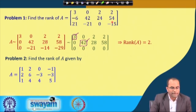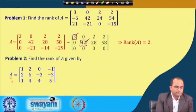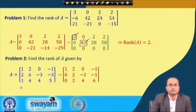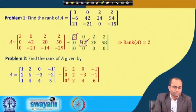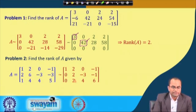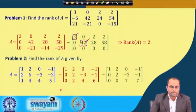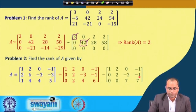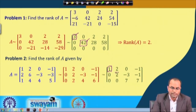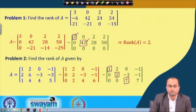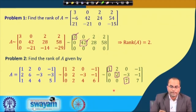Let us take another example where we find the rank of A = [[1, 2, 0, −1], [2, 6, −3, −3], [1, 4, 4, 5]]. We reduce it to row reduced echelon form: first we set elements below the leading entry to 0, giving zeros in the second and third rows for column 1; then we set the element below the next pivot to 0. In the final form we count the pivots: this is a pivot, this is a pivot, and this is also a pivot — 3 pivots in total. Therefore the rank of this matrix A is 3.